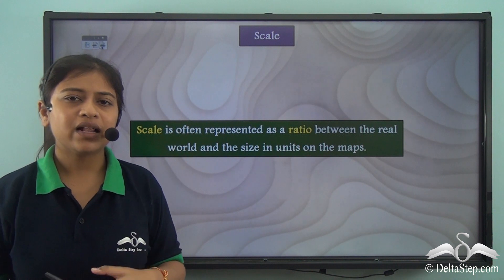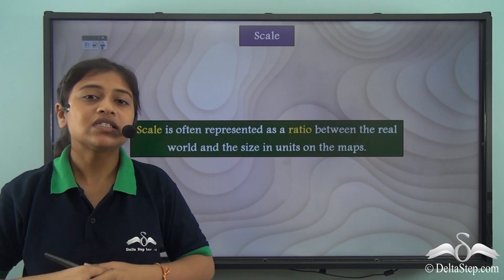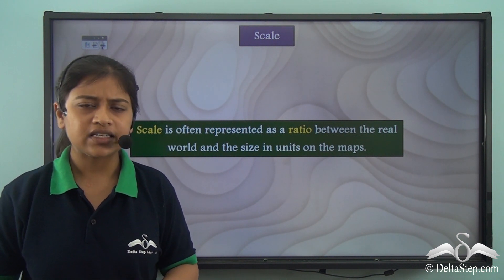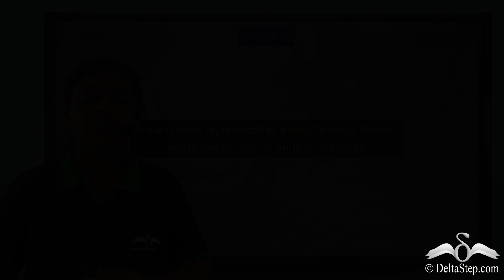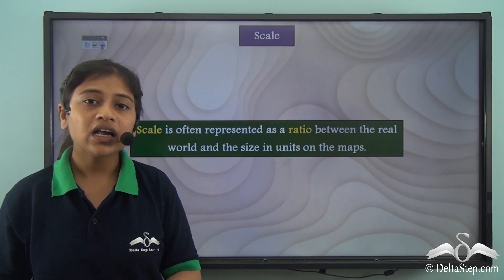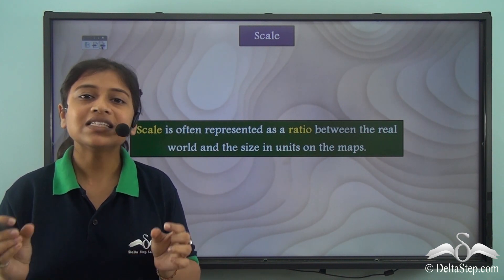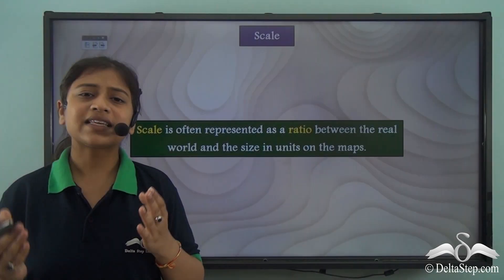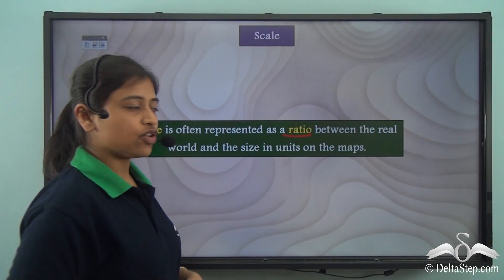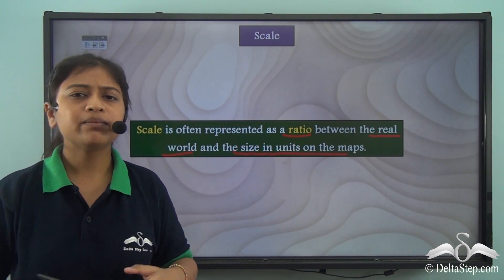Maps help us to study a particular part of the Earth or the entire Earth. Now say for example we want to study the country of India and the different physical features present there. We cannot map that huge Indian subcontinent on a piece of paper, nor can we go around the entire country. So for that we take a particular scale. A scale is often represented as a ratio — the ratio between the real world and the size in units on the map.